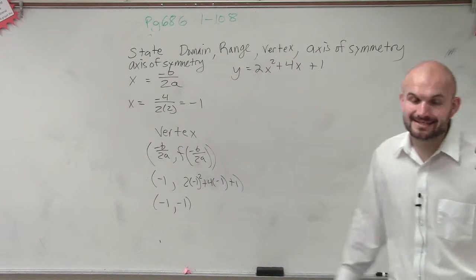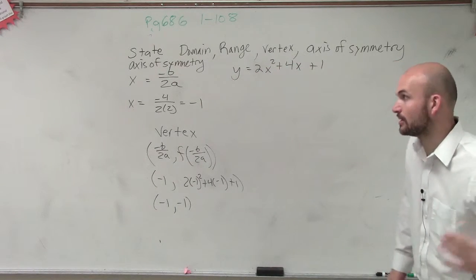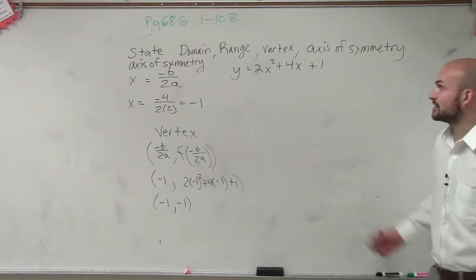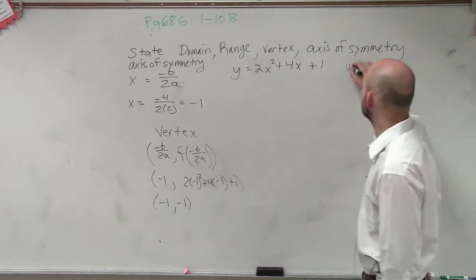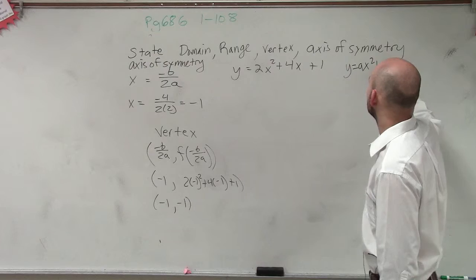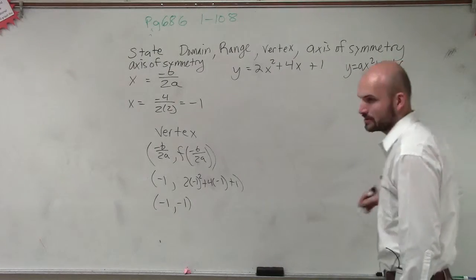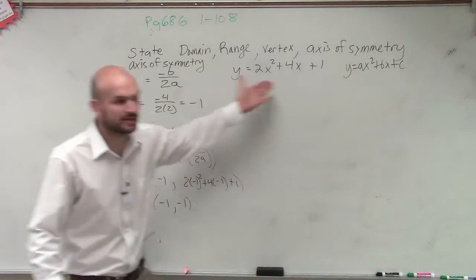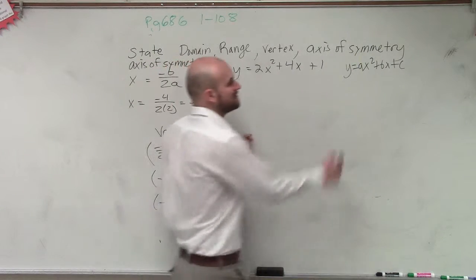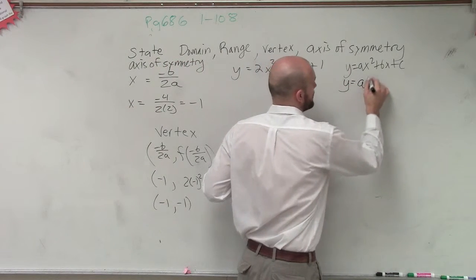So that's how to find the axis of symmetry and vertex by using the formula. The next way, ladies and gentlemen, is if you guys remember, if I have y equals ax squared plus bx plus c, we can find the axis of symmetry and vertex with an equation in that format. However,